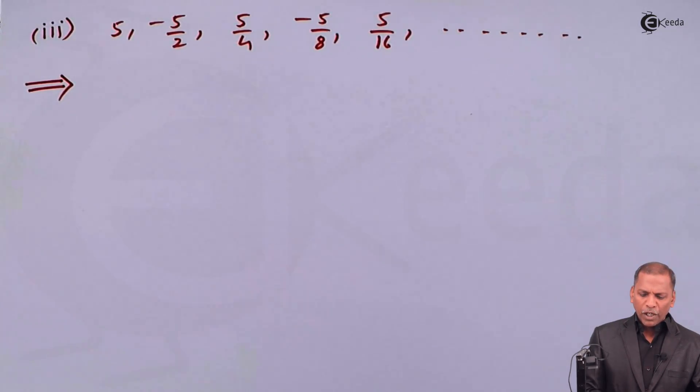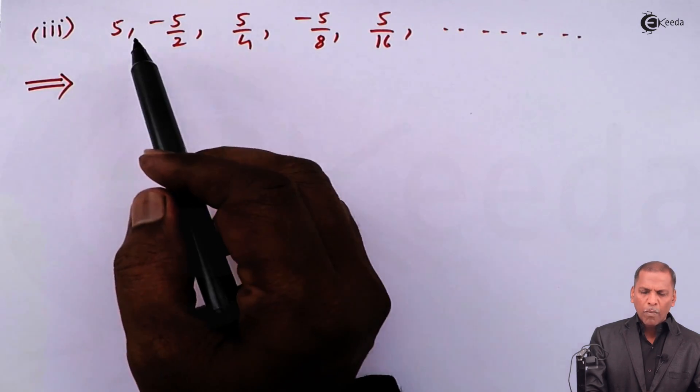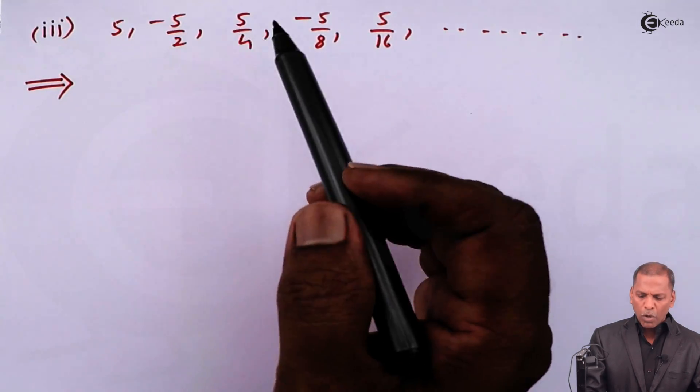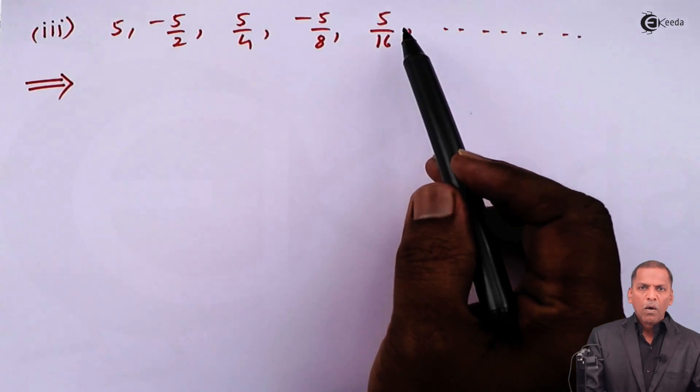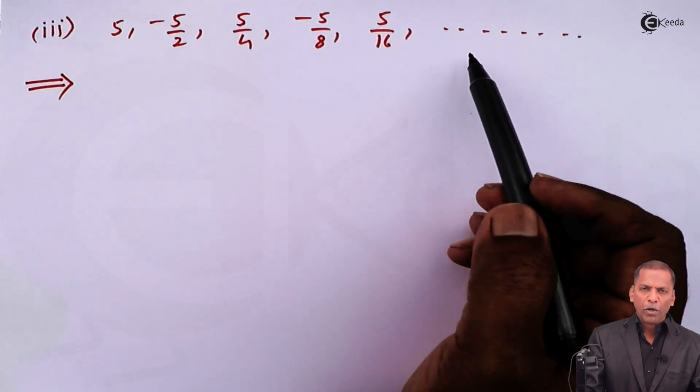Sub question three: we have given numbers 5, -5/2, 5/4, -5/8, 5/16, going on.